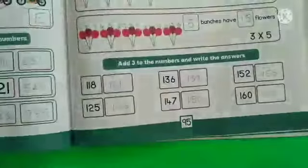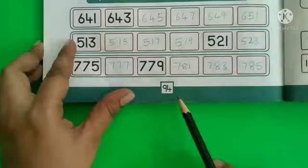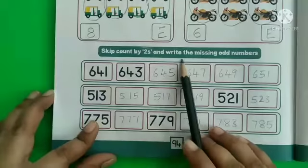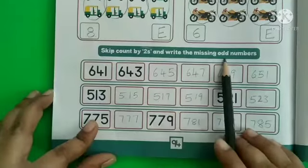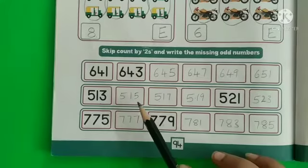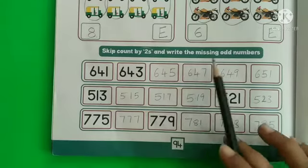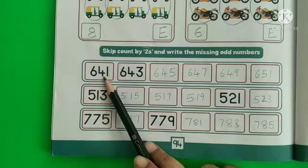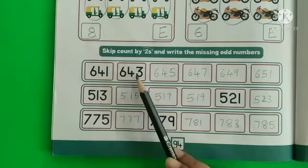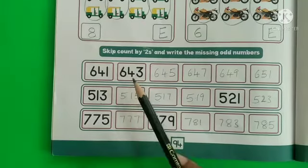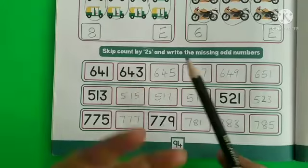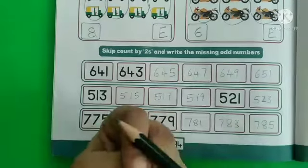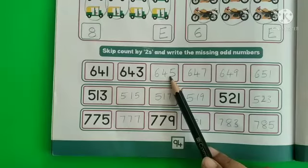Move to next page. Page number 94. Here also, skip count by twos and write the missing odd numbers. In the previous page, they have given even numbers. Here they have given odd numbers. Here, 641. After 641, they only gave 643. After 643, skip twos: 644, 645. Write number 645.